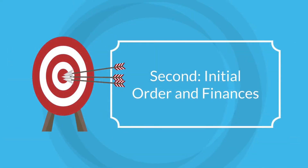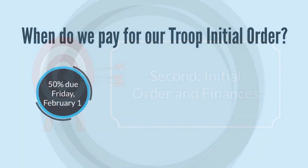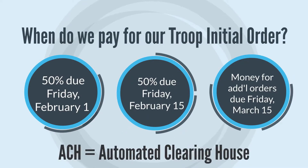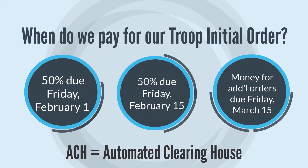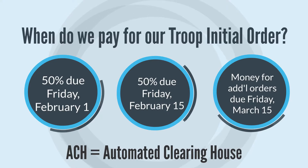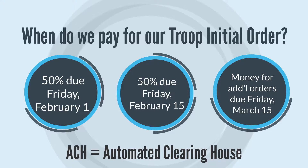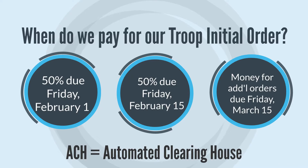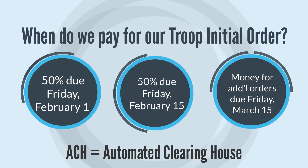Let's move on to how Initial Order impacts your Troop's finances. Troops pay for their initial order in two installments via ACH withdrawal. ACH stands for Automated Clearinghouse. The ACH system is the standard electronic financial transaction system used by banks and some companies throughout the United States. The first installment is taken out of Troop Bank accounts via ACH on Friday, February 1st.